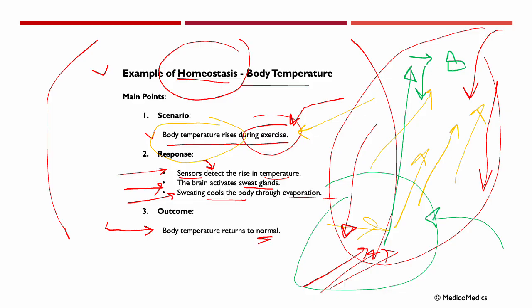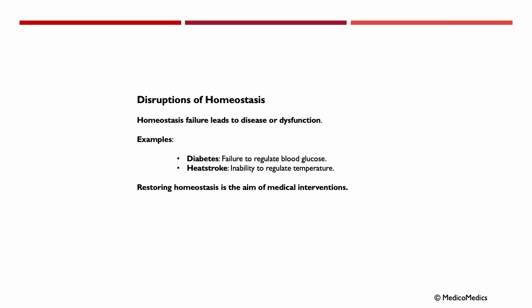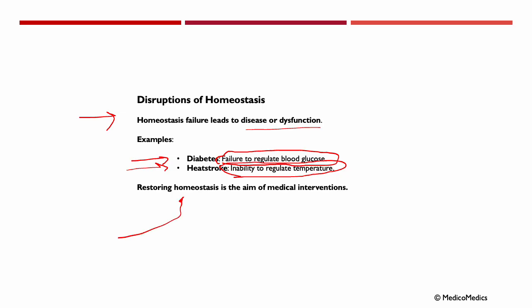What happens when the balance of homeostasis actually fails? Disruptions of homeostasis lead to disease or dysfunction. For example, diabetes is a failure to regulate blood glucose levels, and heat stroke is the inability to regulate temperature. Restoring homeostasis is the aim of medical interventions. To understand diseases, we must first master physiology's role in maintaining balance.